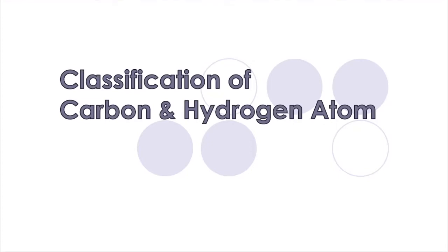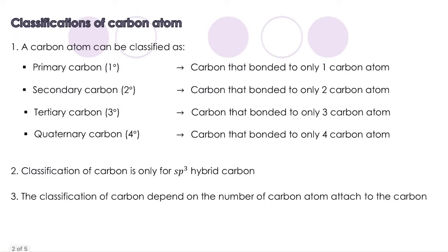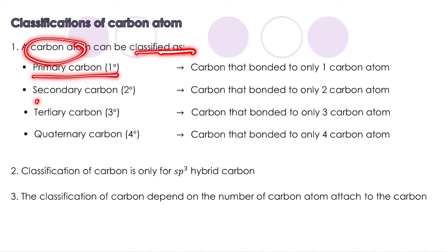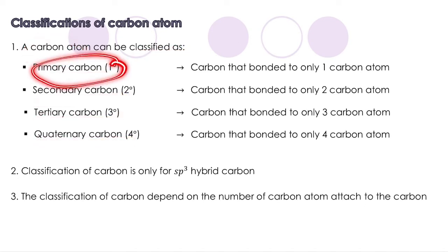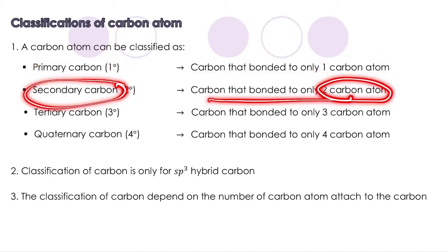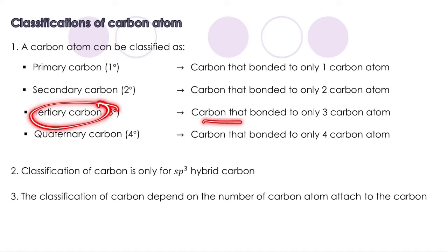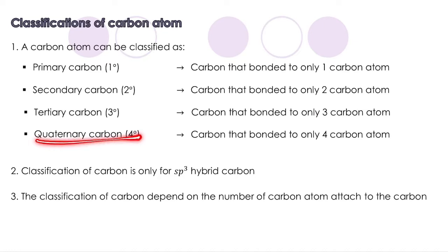Classification of Carbon and Hydrogen Atoms. A carbon atom can be classified as primary carbon, secondary carbon, tertiary carbon, and quaternary carbon. Primary carbon is a carbon bonded to only one carbon atom. Secondary carbon is bonded to only two carbon atoms. Tertiary carbon is bonded to only three carbon atoms. And quaternary carbon is bonded to only four carbon atoms.